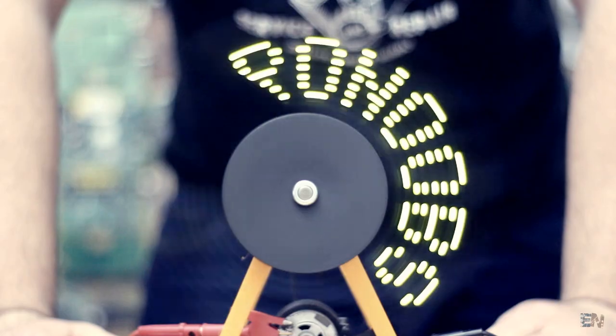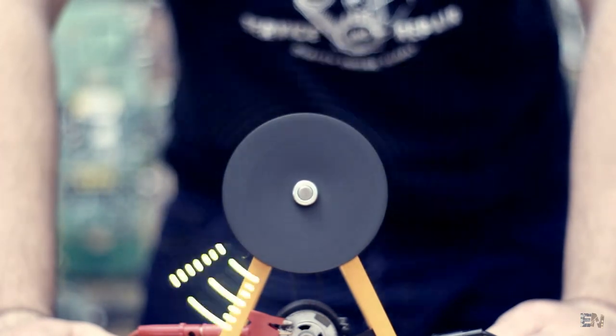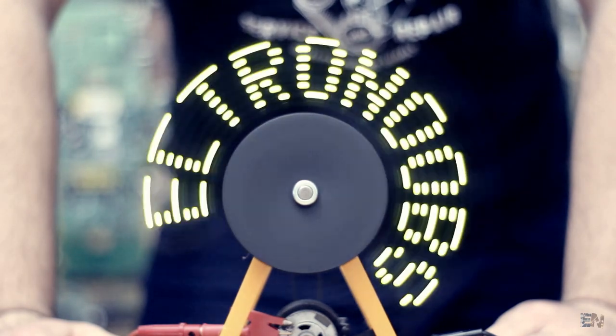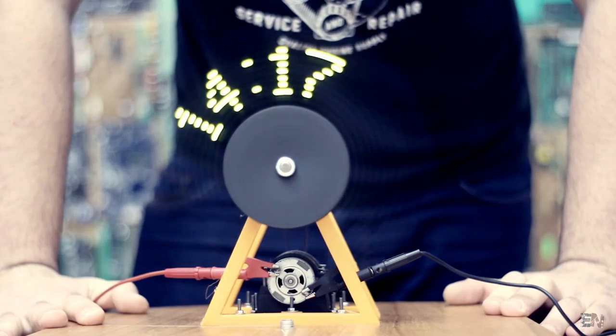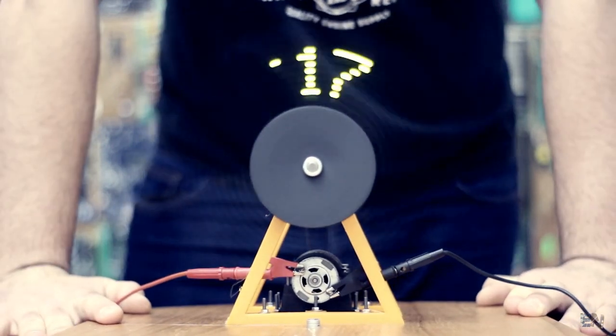You've got an example code for writing text as well in the description below. Download it and read all the comments in the code in order to understand how it works. It's more or less the same as in this example, just turning on and off LEDs at a fast enough speed so your eyes won't tell the difference.